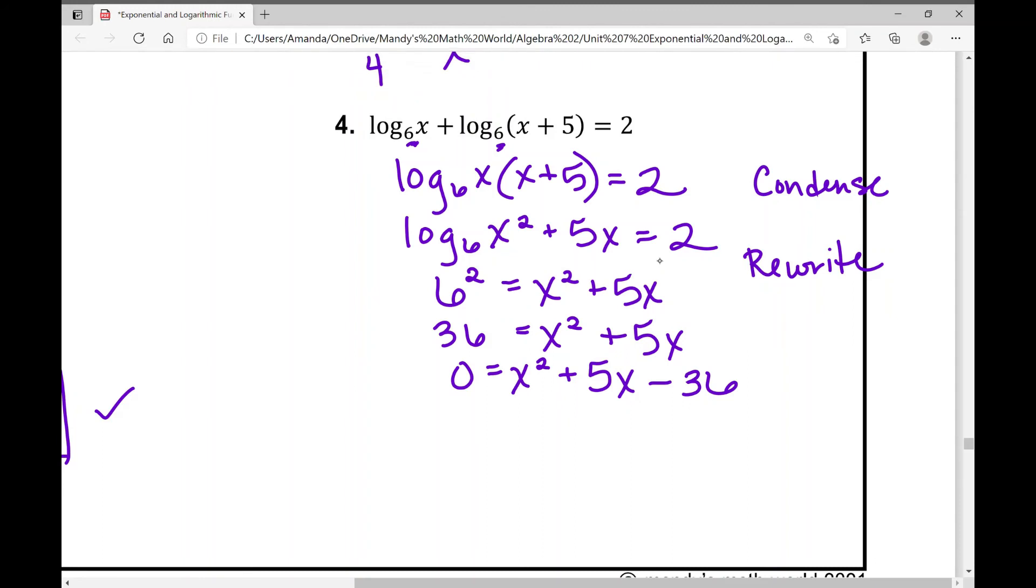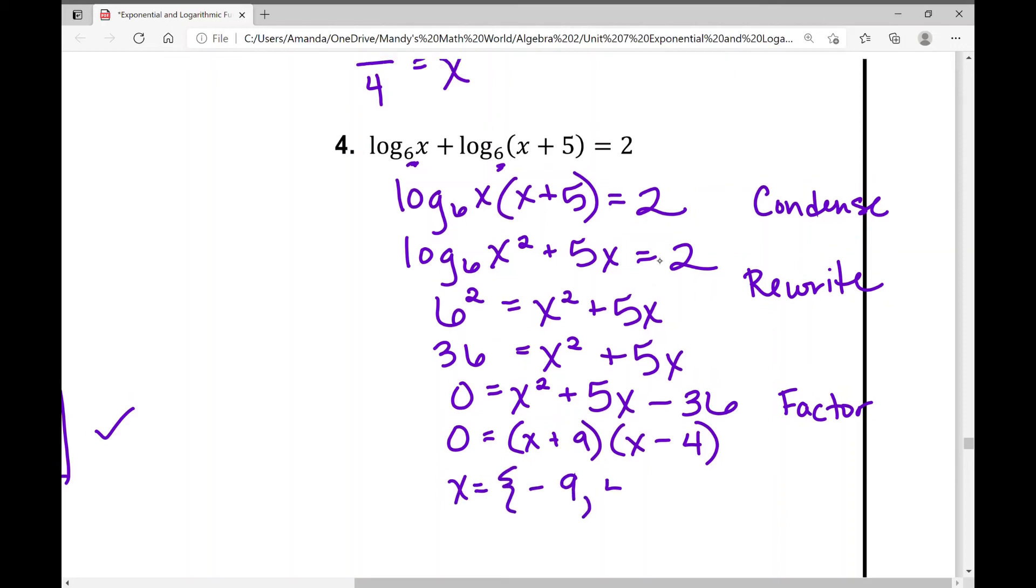So what did we do there? Or what are we going to do now? We're going to factor it. So I need two numbers that multiply to negative 36 that add to five. What are those numbers? Positive nine and negative four. So x plus nine times x minus four. So what do I do when I am solving this quadratic? I'm going to use the zero product property and set my factors equal to zero, and I'm going to solve. So when I do that, I get x equals negative nine and positive four.